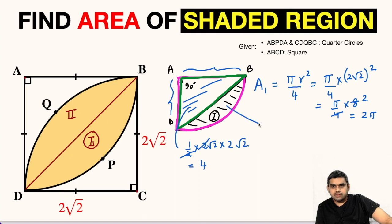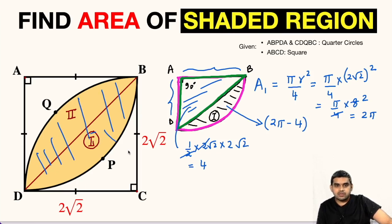The area of this first part of the shaded region will be equal to 2 pi minus 4 square units. So, the area of this complete shaded region will be twice the area of the first part. This total area will be 2 times 2 pi minus 4, or 4 pi minus 8 square units.